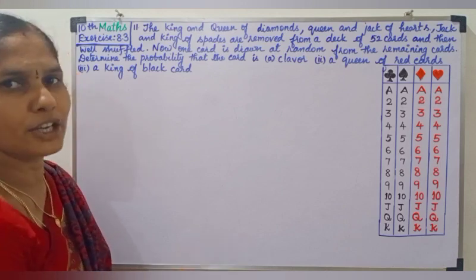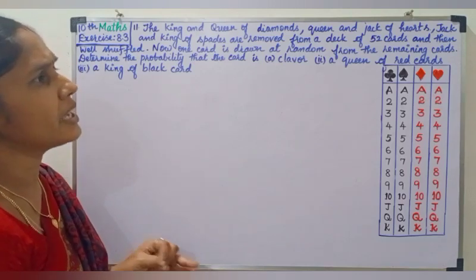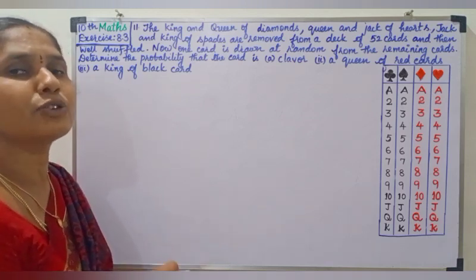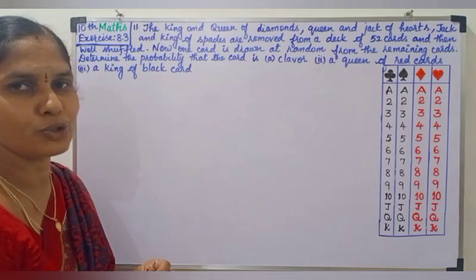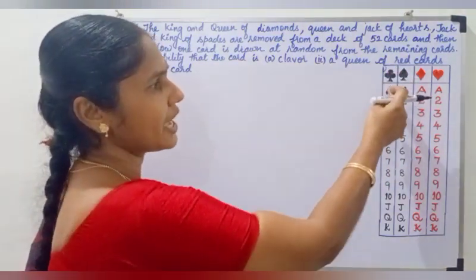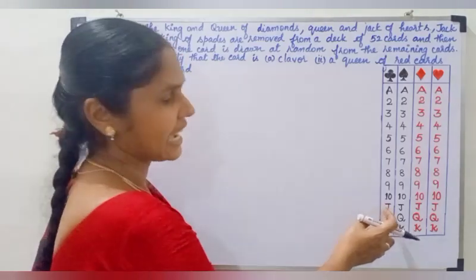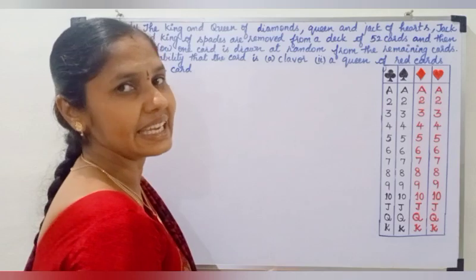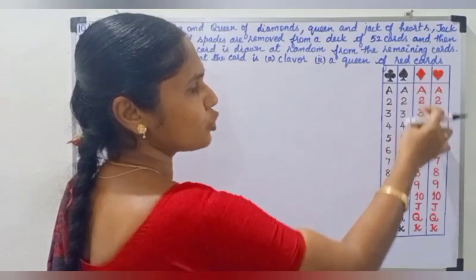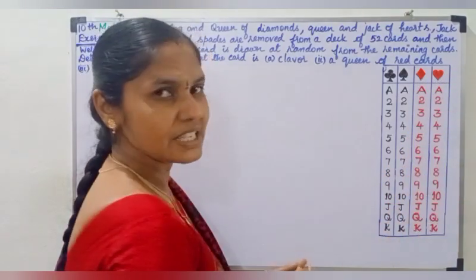Now, one card is drawn at random. There are 3 questions to find the probability of a card. A standard deck has 52 cards — Spade: 13 cards, Diamond: 13 cards, Heart: 13 cards, Club: 13 cards. Cards include numbers 2 through 10, Jack, Queen, King, and Ace.